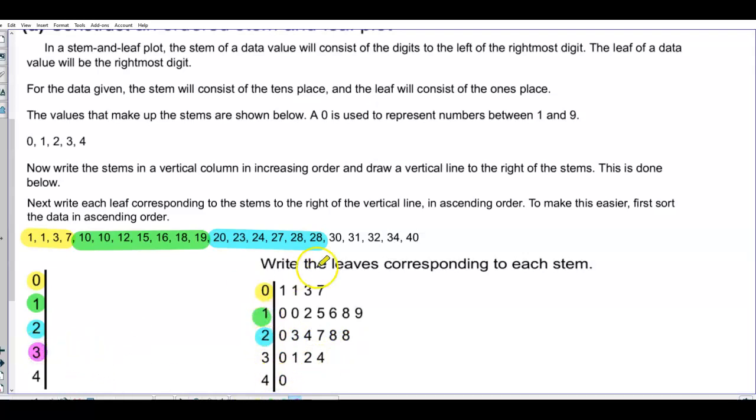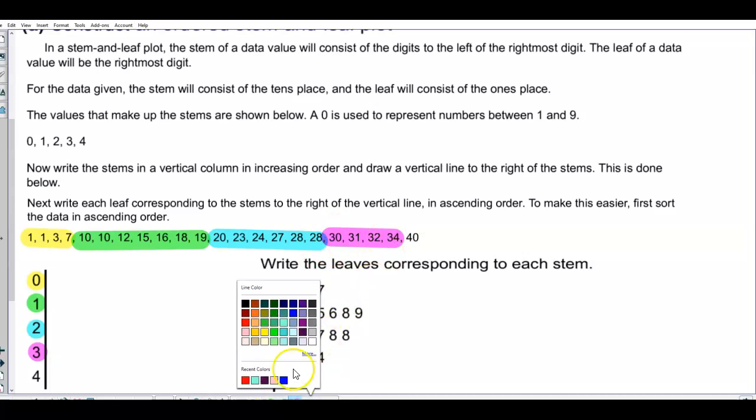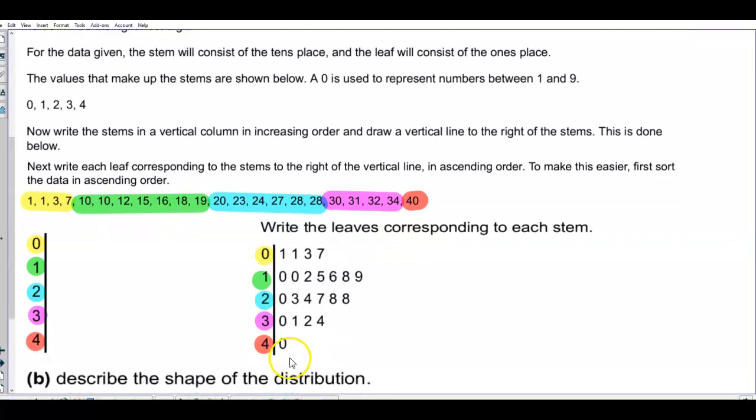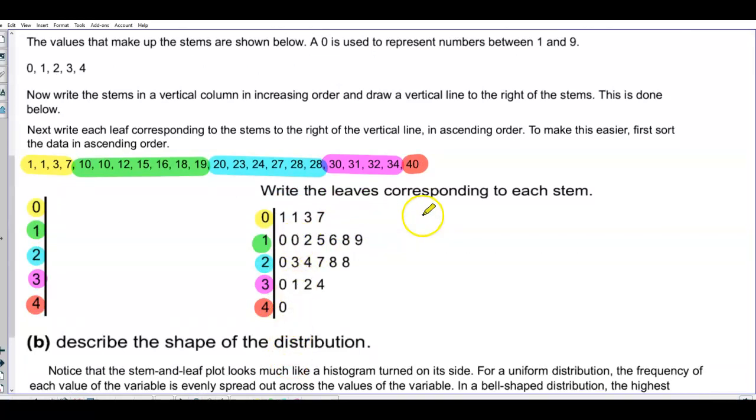Next we have a tens place of a 3. So it's going from 3 to 34. So starting at 3 we have a 0, 1, 2, and 4 to the right of that tens place. And then the last one, we have a 4 in the tens place, and that has a 0. So there is our stem and leaf plot for part A.